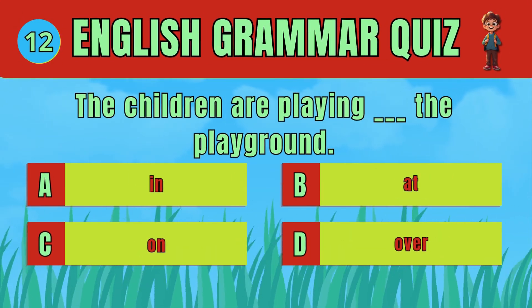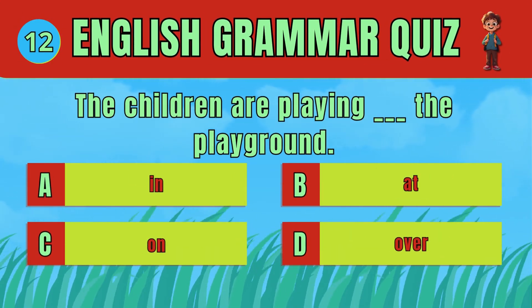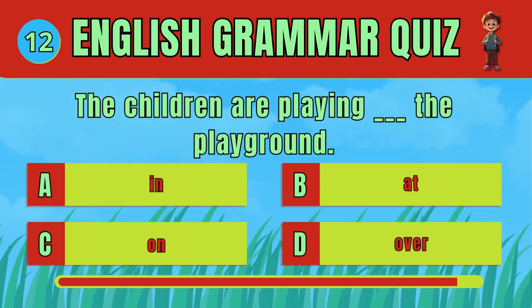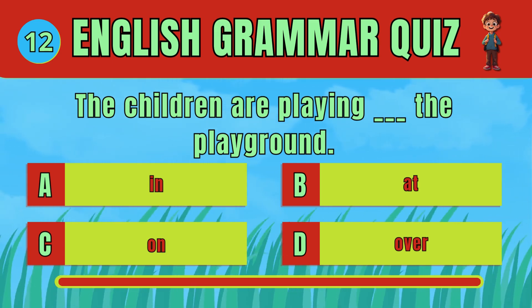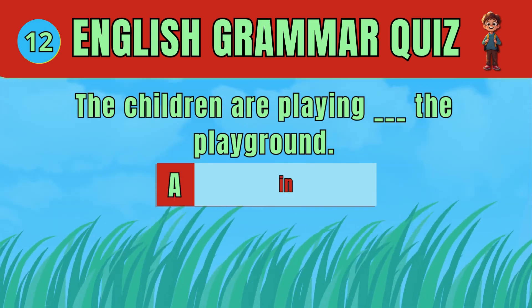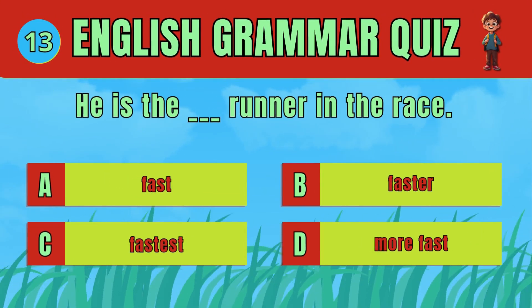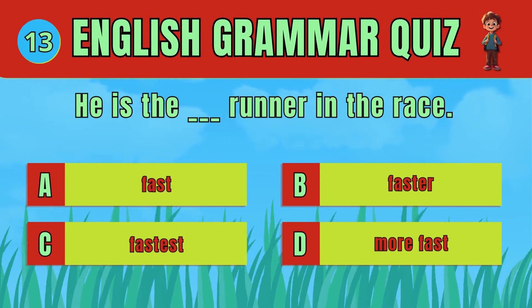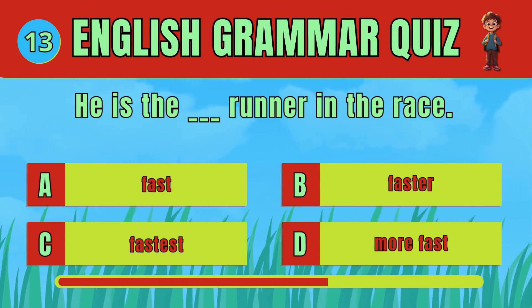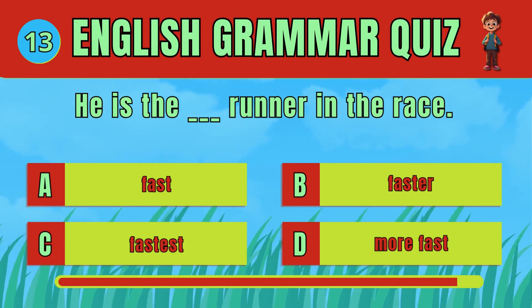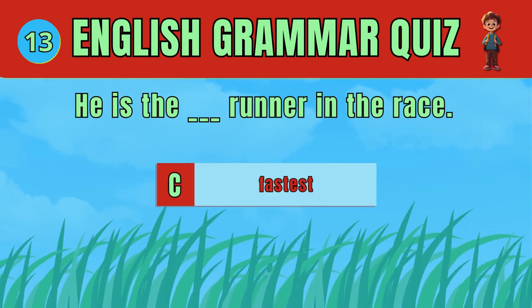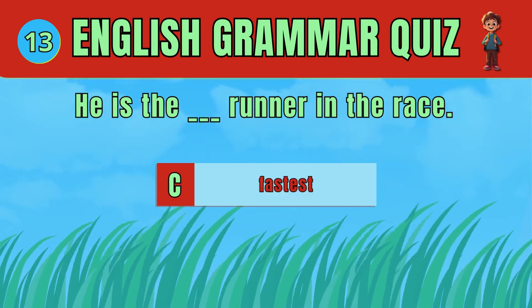Choose the correct preposition to describe where the children are playing. The answer is: fastest. He is the fastest runner in the race.